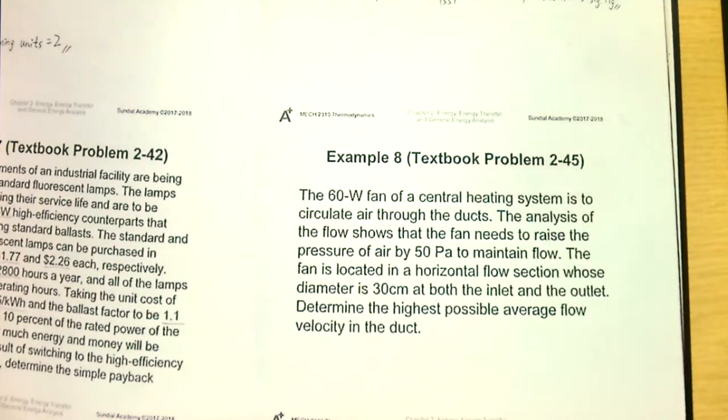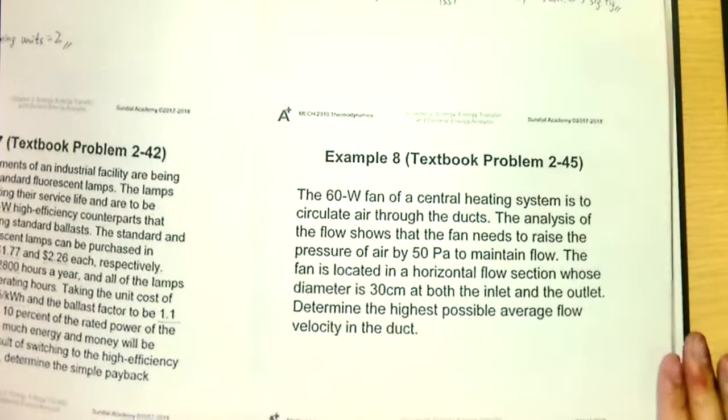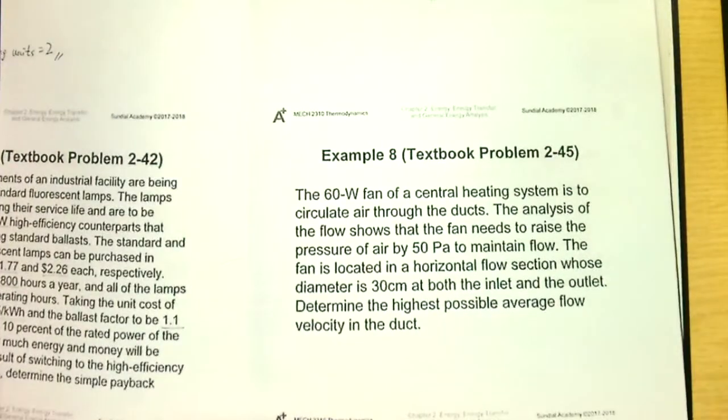We also have another example, Example 8, about a situation. A 60-watt fan of a central heating system is to circulate air through the duct. The analysis of the flow shows that the fan needs to raise the pressure of air by 50 Pa to maintain the flow.